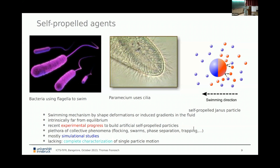Here are more slides on biological microswimmers: self-propelled by flagella — E. coli, spermatozoa, some algae, and choanoflagellate cells. Then there are artificial agents: Janus particles, and also magnetic particles that can be agitated by external magnetic fields to make them swim.